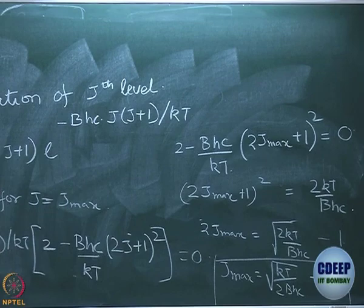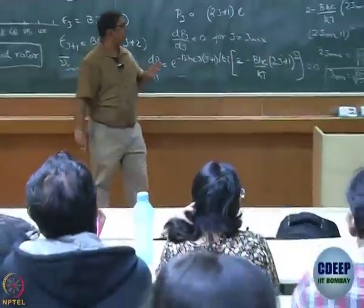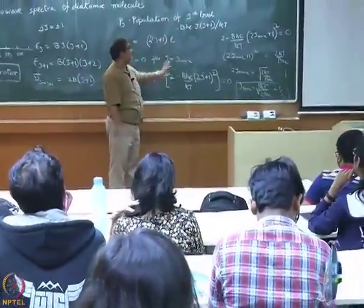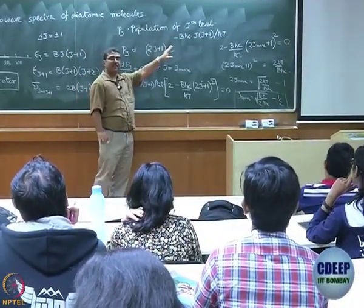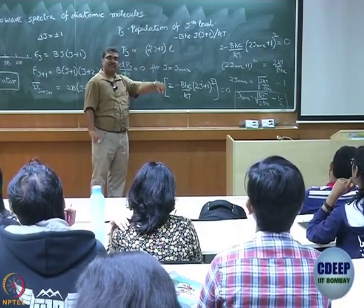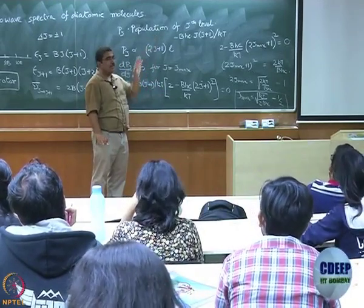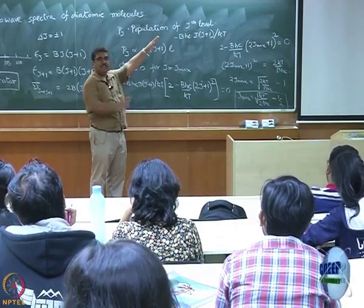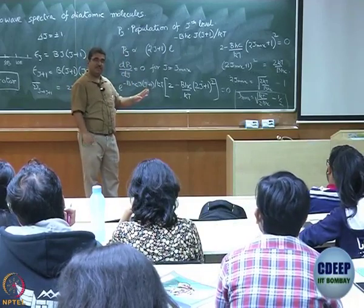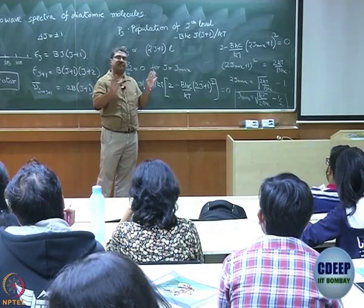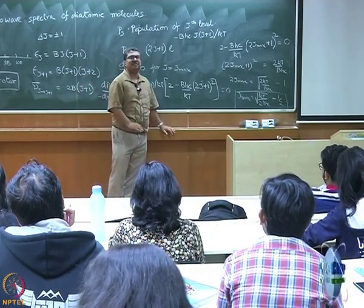The problem with this approach is that we are differentiating as if P_J is a continuous curve, but J takes only discrete integer values. So the answer we get will usually not be an integer — you might get 3.2 or 10.5. J_max must be an integer, so take the nearest integer: if you get 5.8 the answer is 6; if you get 10.2 the answer is 10.